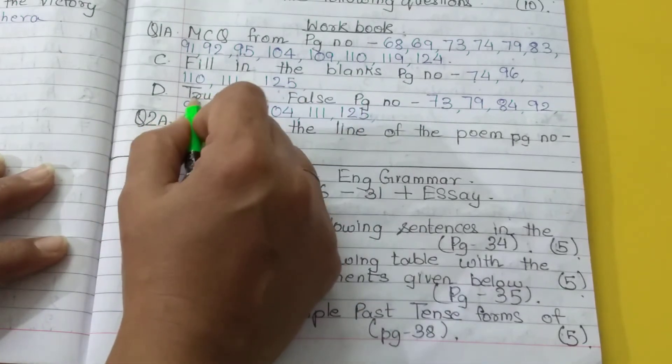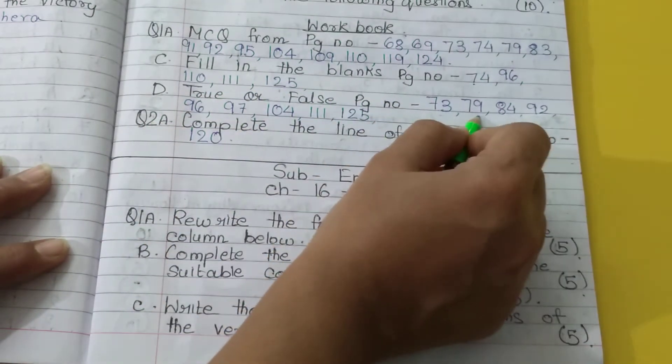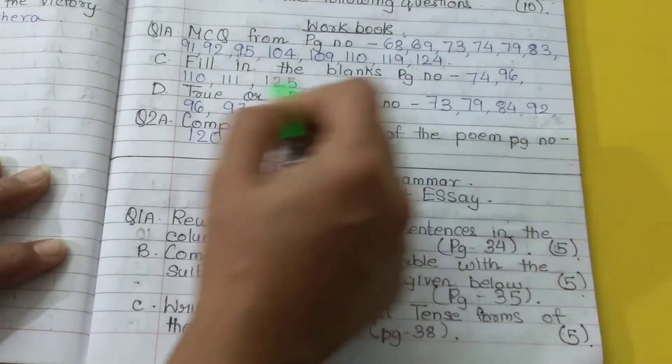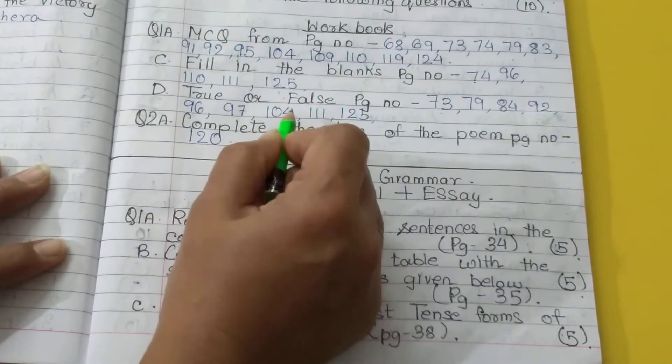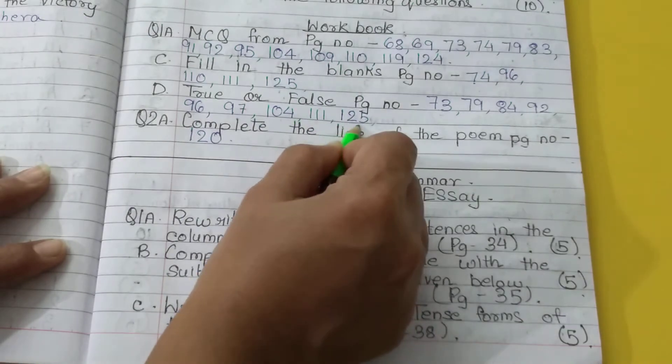After that, you have to write down true and false of page 73, 79, 84, 92, 96, 97, 104, 111, and 125.